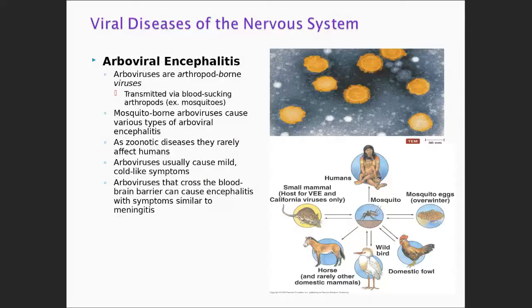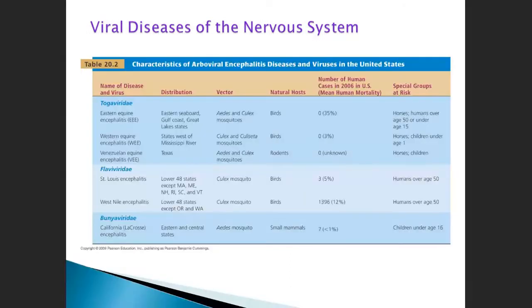I want to talk about arboviruses again — they're important. The ones we worry most about are West Nile, dengue fever, and Zika. These are all arboviruses transmitted by mosquitoes. Others include Eastern equine encephalitis, Western equine encephalitis, and Venezuelan equine encephalitis. In Texas, we're most worried about West Nile and dengue fever. There are vaccines for horses against equine encephalitis and West Nile, but we don't have good preventative measures or antivirals for the ones that affect humans.